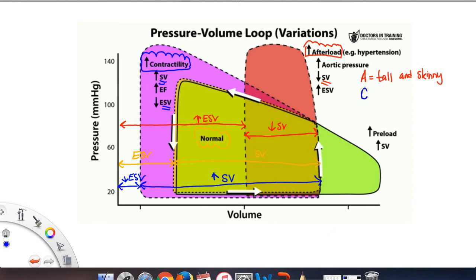For contractility, we're going to take a look at C. When you write C, it curves to the left. So the loop is going to be on the left.